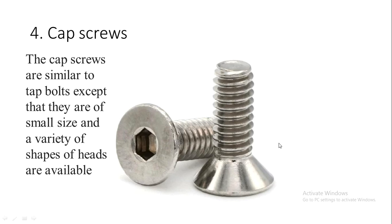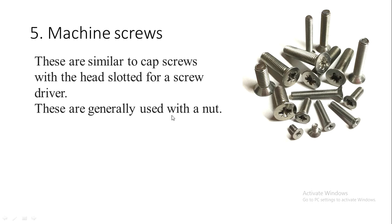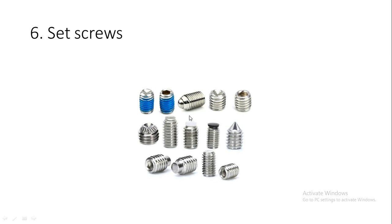The next type is a cap screw, which is similar to a tap bolt except that it is smaller in size and the head is of different shapes — here we can see a hexagonal type of head. Next is a machine screw, which is also similar to a cap screw, but the head is slotted based upon standard screwdrivers available in the market; a nut is generally used to tighten the machine screw. Set screws do not have a particular standard shape — the head is manufactured based on requirements. Here we can see a conical type of head and a flat circular type of head. Set screws are completely threaded and fully enter the space where they are to be fastened, so they are not visible outside and no separate head is provided. A specially shaped screwdriver is required to remove them.